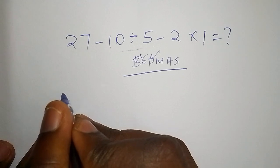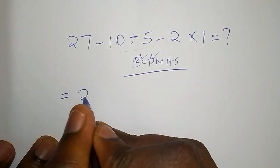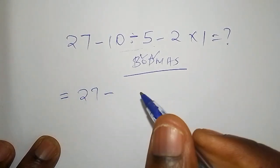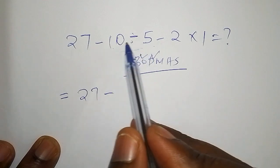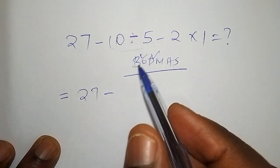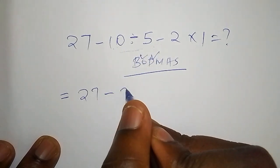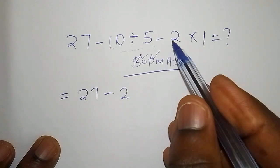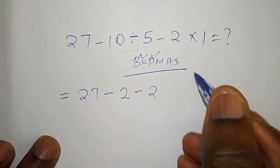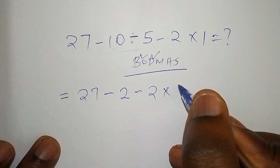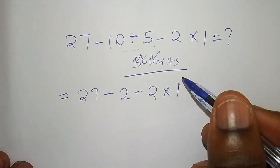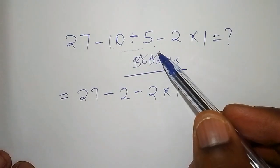So the first step that you're going to take, we're going to say that this one is equals to 27 subtract from, now we've agreed that you're working out 10 ÷ 5, and 10 ÷ 5 is 2. Then 2 subtract from 2 here, then multiply by 1.